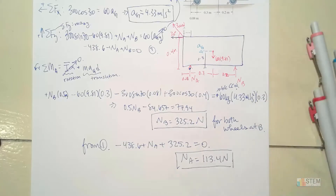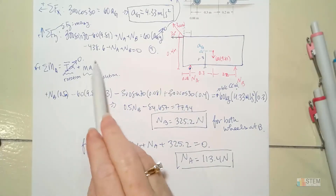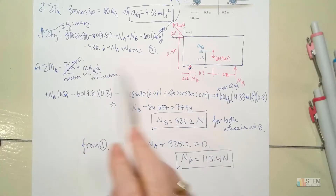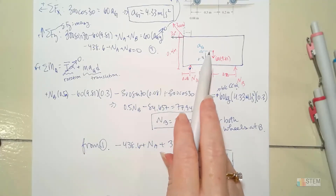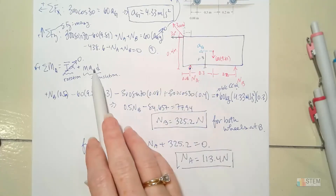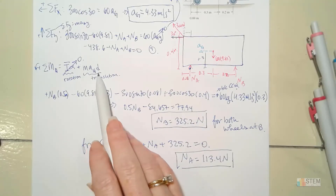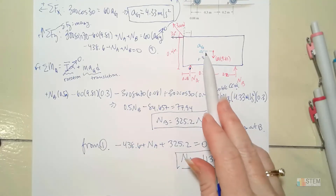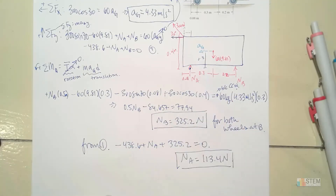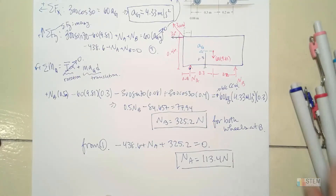And there we have it — we found NA and NB, and the acceleration of the cart at G. That's how you do a translation-only problem for rigid body kinetics. The key thing most people mess up on is this: if you put the acceleration of G on your diagram, this part is a lot easier, because all you're doing is finding a moment created by the acceleration of G. Hopefully you found that helpful, and I will see you guys next time — have a great rest of the day.